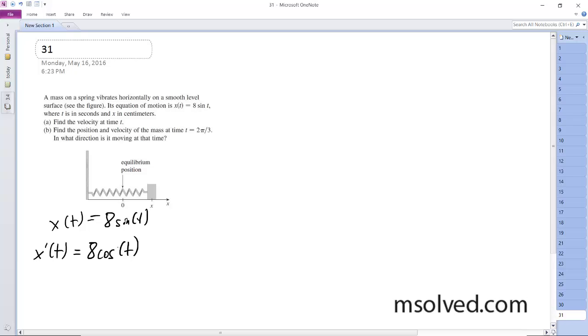We want to find the position and velocity of the mass at time t = 2π/3. To do that, we first plug it into the sine of t to get the position, and then we plug that into the derivative.